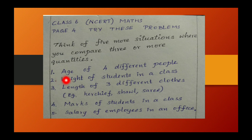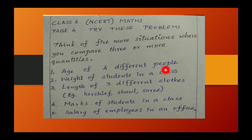The first situation is comparing the age of four different people in a family — father, mother, grandfather, grandmother, or a boy kid and a girl kid. Definitely their ages will be different.